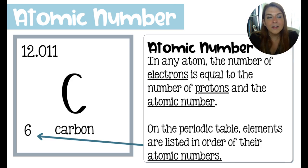In any atom, the number of electrons is equal to the number of protons, which is also the atomic number. This is true for atoms. It won't necessarily be true a little bit later when we talk about ions, but for now, as we're talking about atoms, know that the protons is going to equal the number of electrons.